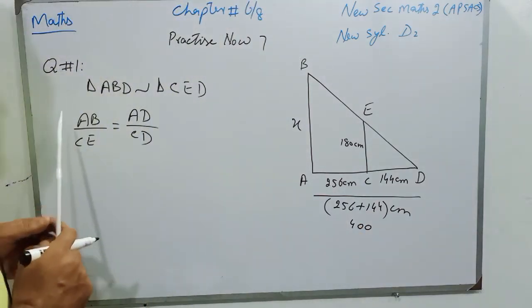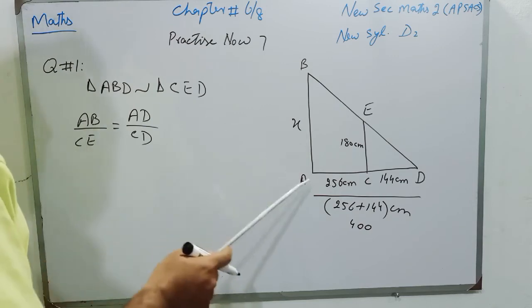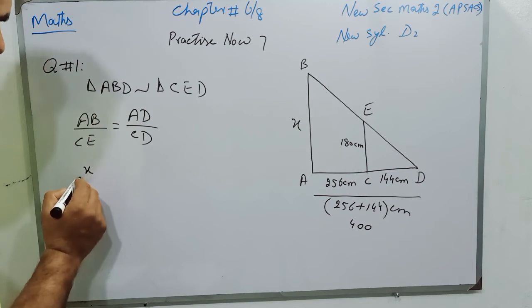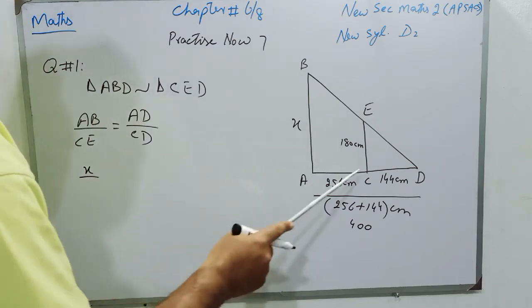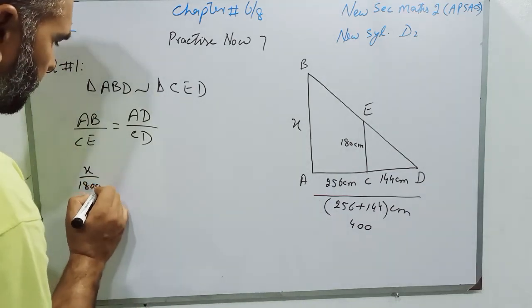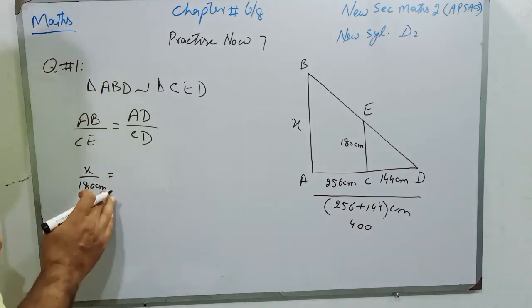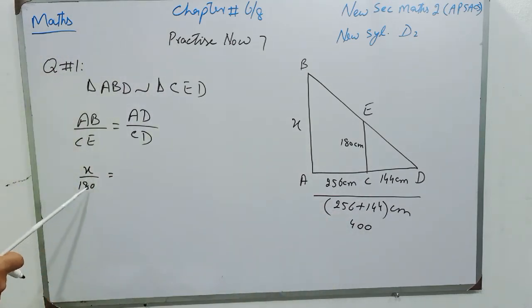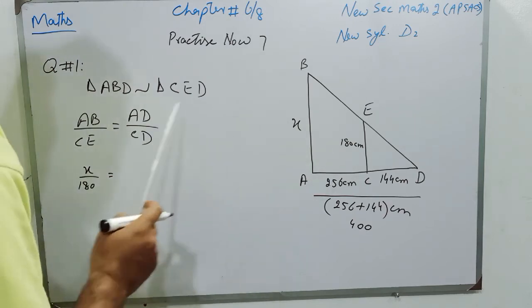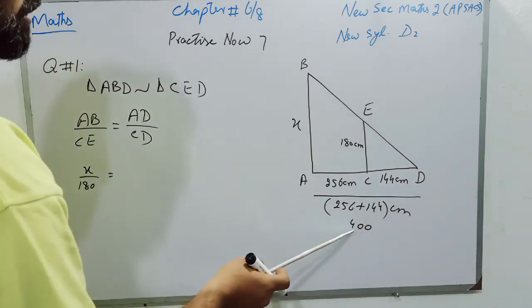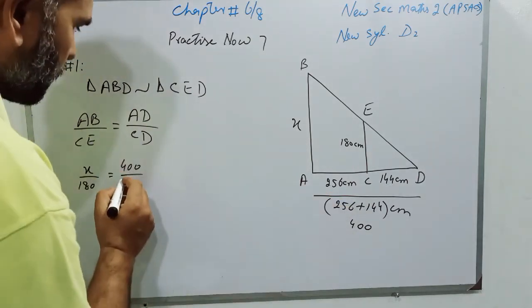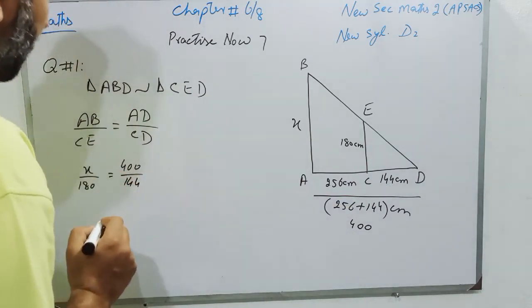We will replace the values. In place of AB, I will write X. So X over 180 is equal to—we need not write units because it is understood that all values are in cm. The length of AD is 400, whereas CD is 144, and we have to find the value of X.